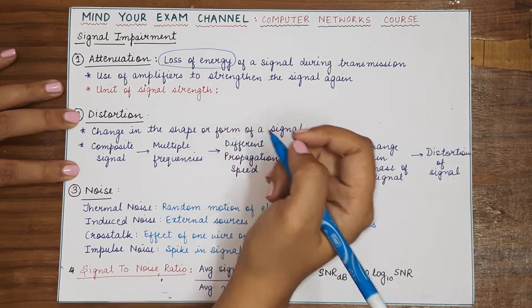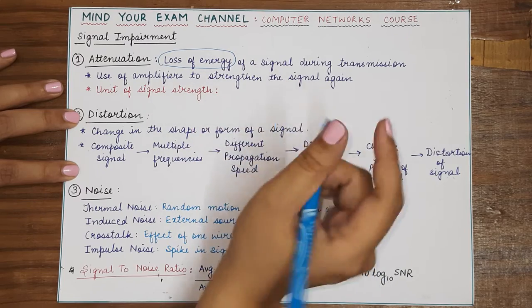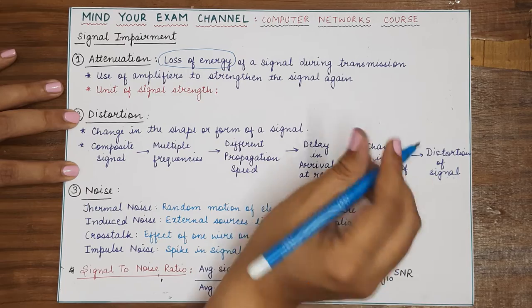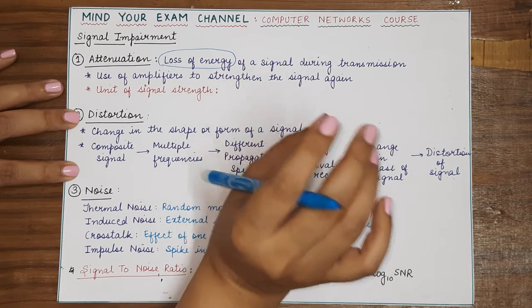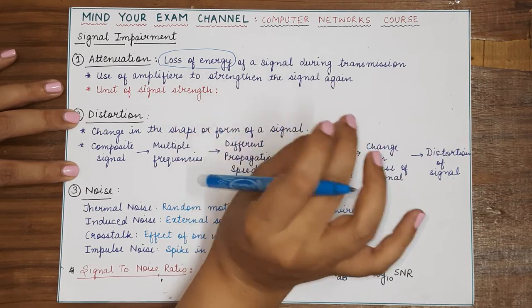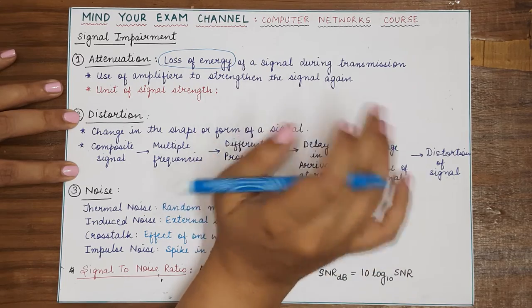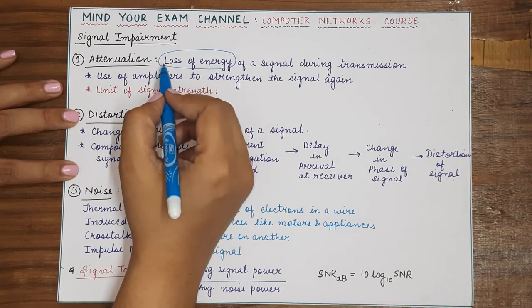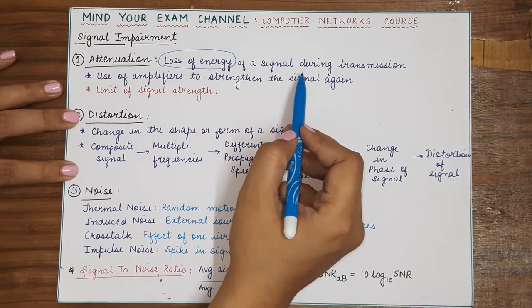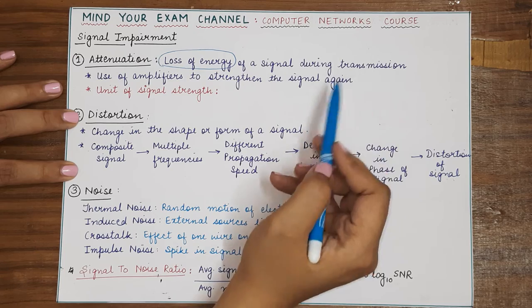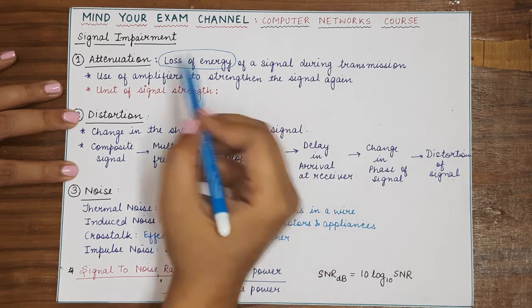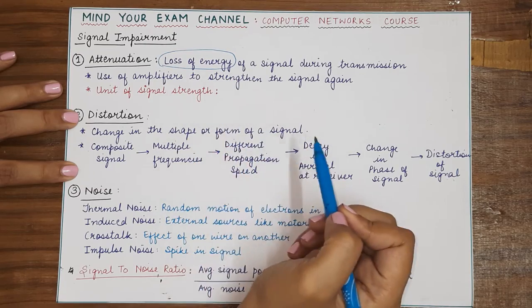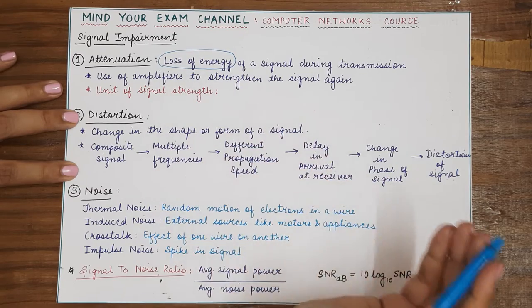That is why you can see the wires that you have in your homes or in your professional working areas also. The wires, even if they are insulated, they become a little warm when the current or signals are flowing through them. So attenuation is basically the loss of energy of a signal when it is being transmitted over large distances and this loss of energy basically leads to the signal getting weaker as it goes further on.